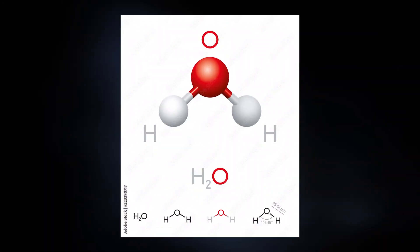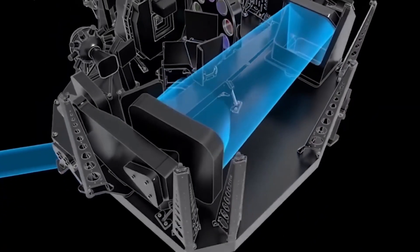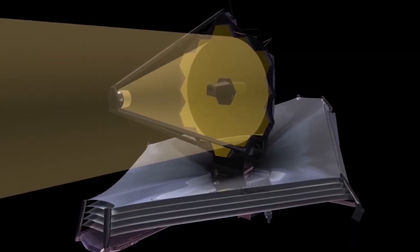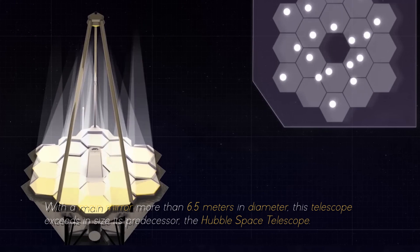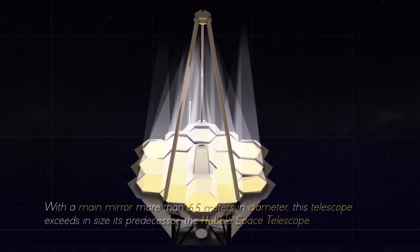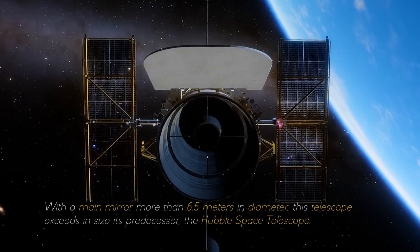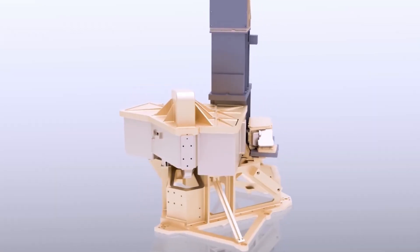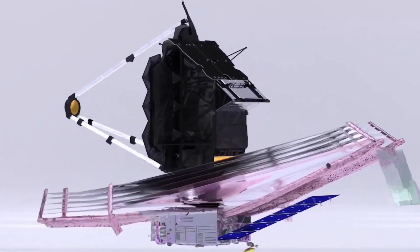What we are seeing here is the chemical signature of water vapor. The James Webb Space Telescope is equipped with an array of advanced scientific instruments carefully designed to observe the universe at an unprecedented range of wavelengths. With a main mirror more than 6.5 meters in diameter, this telescope exceeds its predecessor, the Hubble Space Telescope.